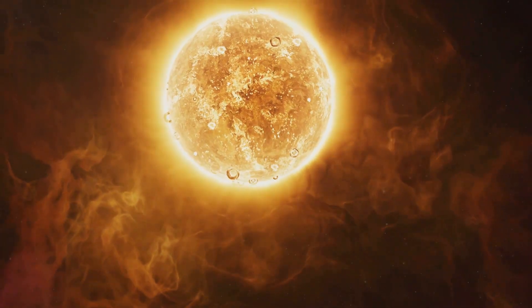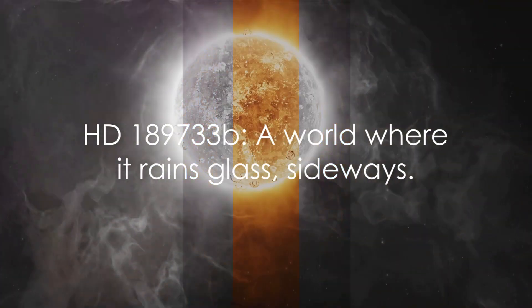The planet's proximity to its parent star is responsible for these extreme temperatures, leading to violent winds that whip across the surface at speeds over 4,000 miles per hour. HD-189733b, a world where it rains glass sideways.